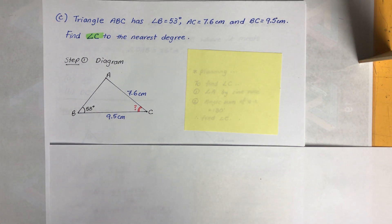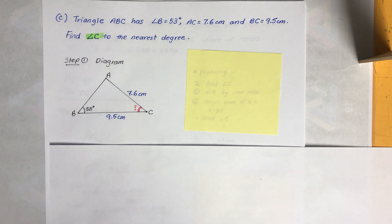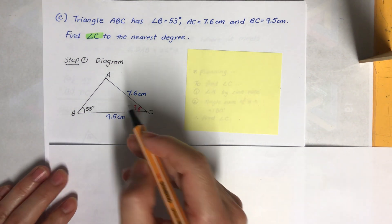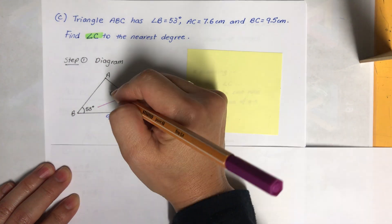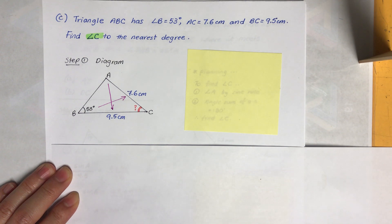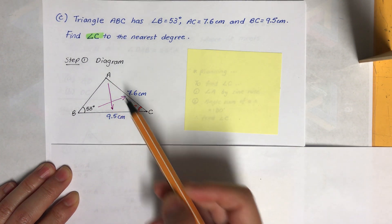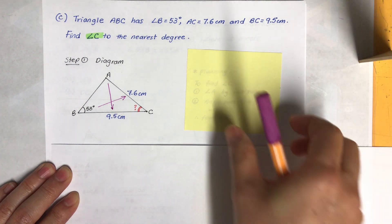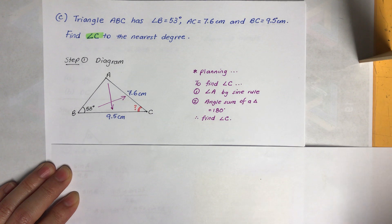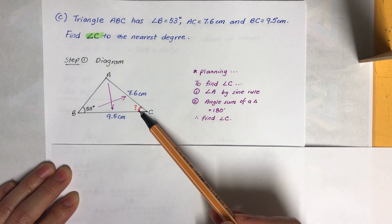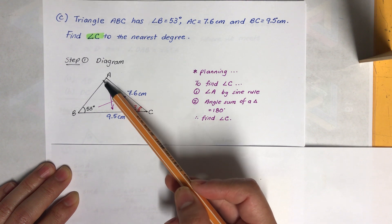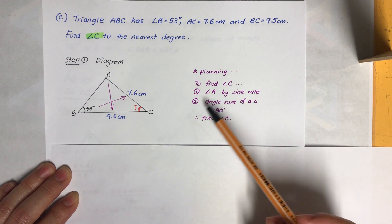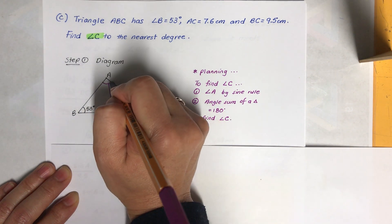Part c: triangle ABC has angle B = 53°, AC = 7.6 cm, and BC = 9.5 cm. Find angle C to the nearest degree. This requires careful thinking — we don't have angle A and we need angle C. So we need to find angle A first using the sine rule, then use the angle sum of a triangle to find angle C.